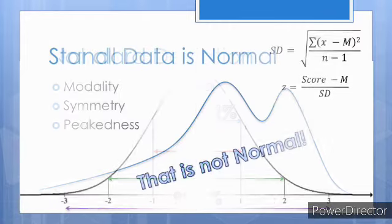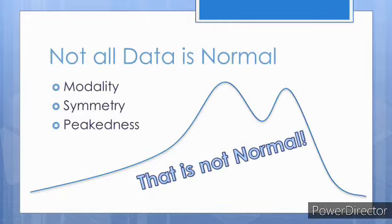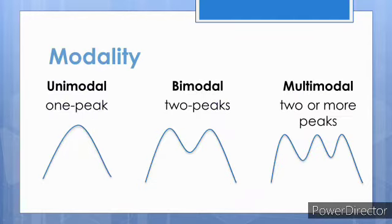Not all samples approximate a normal curve. To understand more about distributions, it is important to understand modality, symmetry, and kurtosis. A distribution can have more than one peak — the number of peaks determines the modality. Most distributions are unimodal, but distributions with two peaks are bimodal, and distributions with more than two peaks are multimodal.